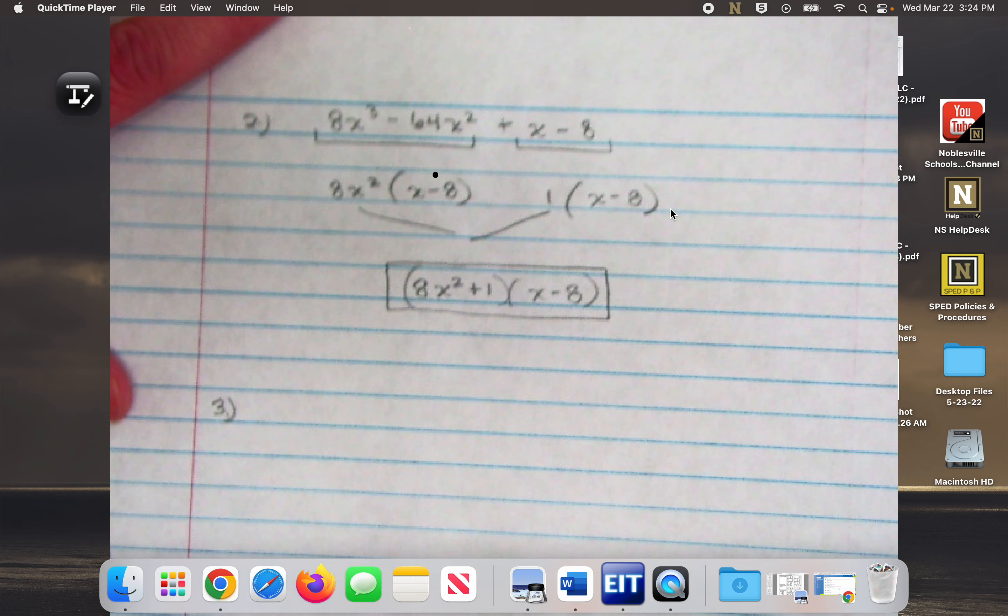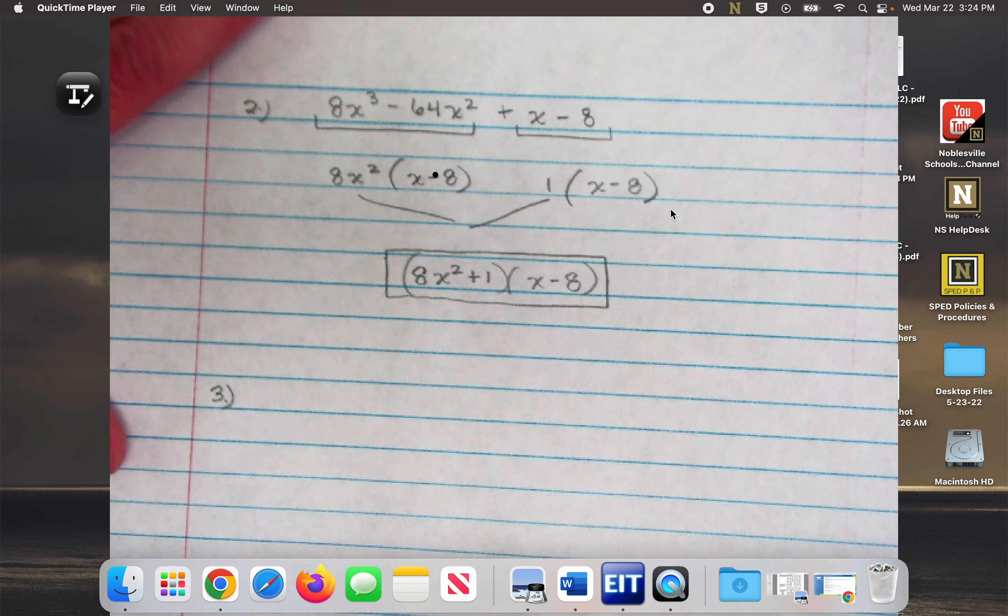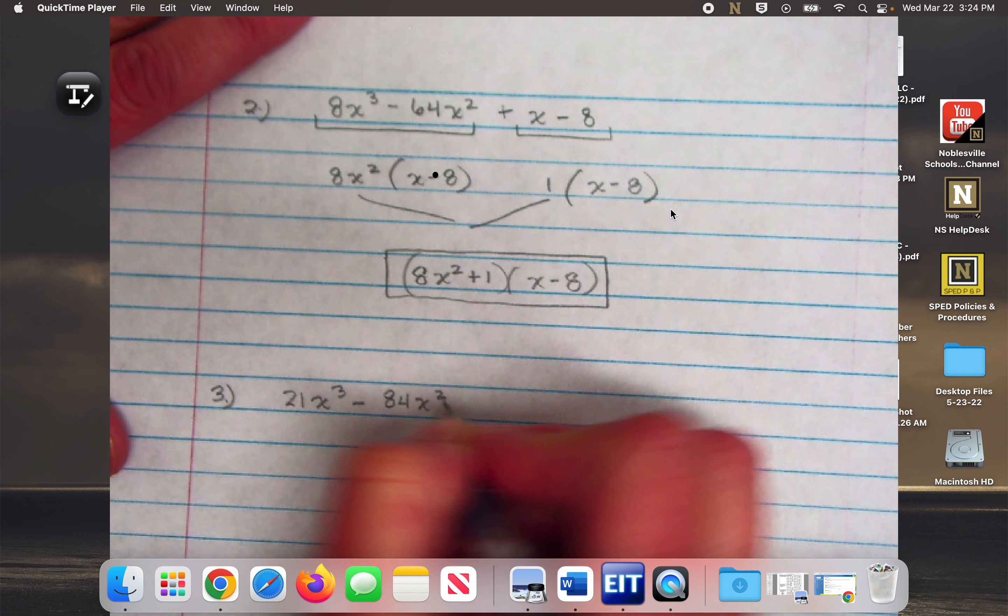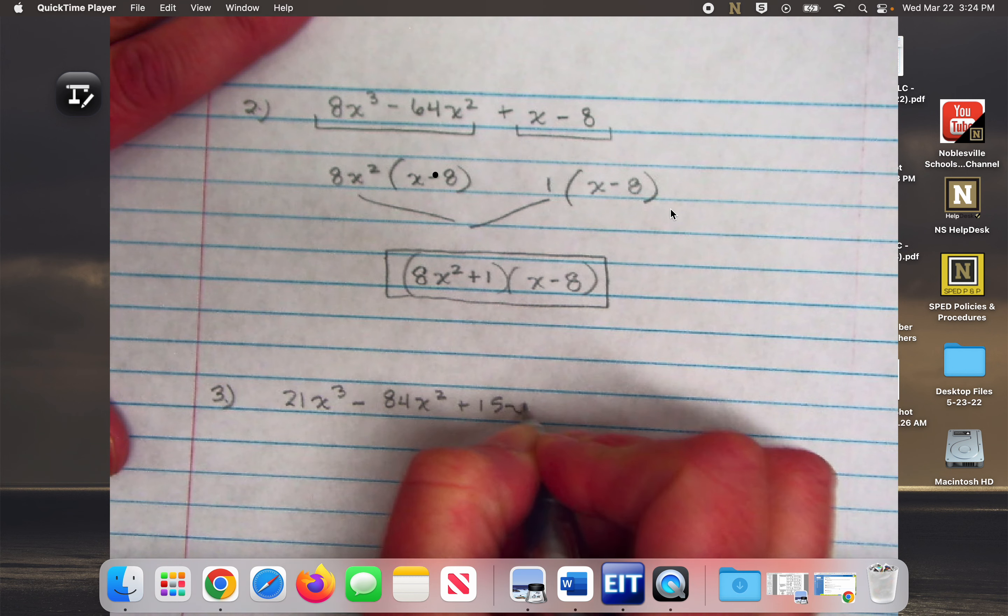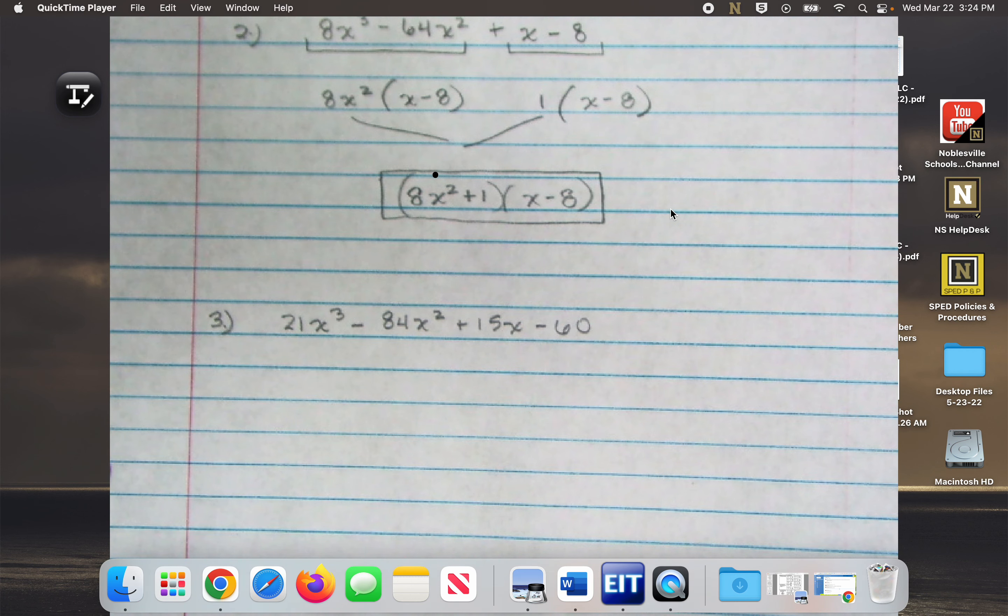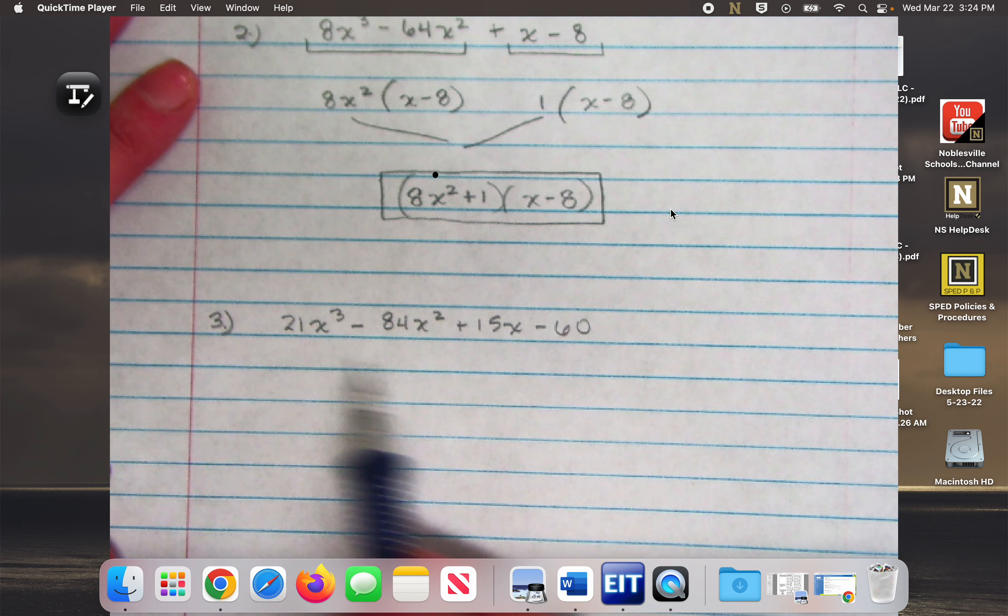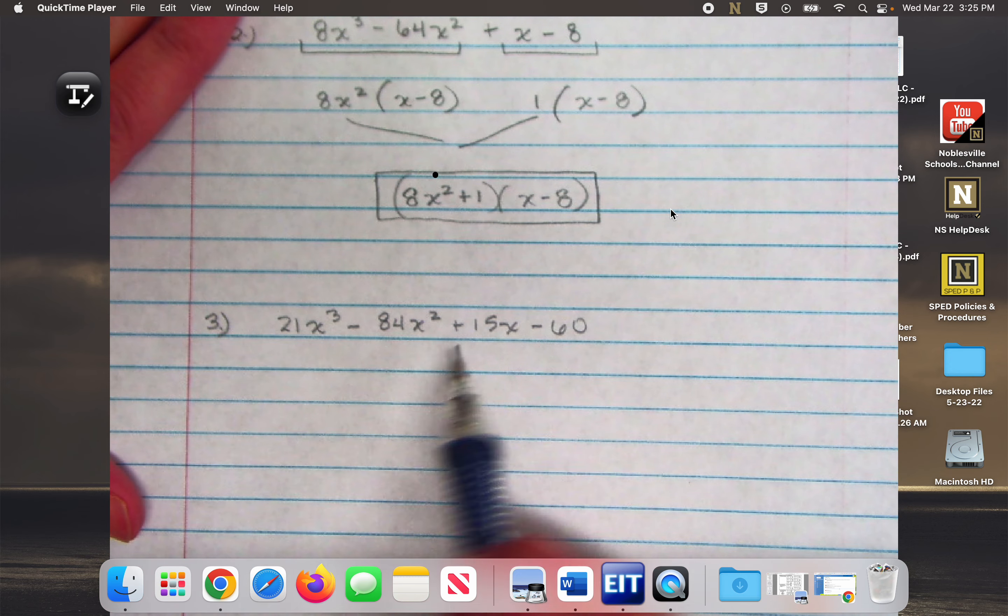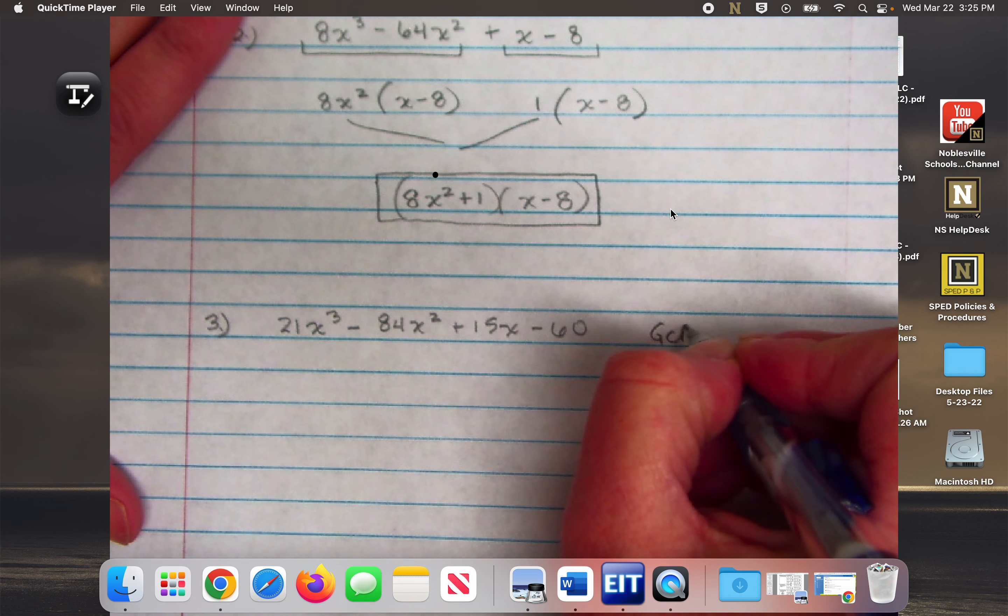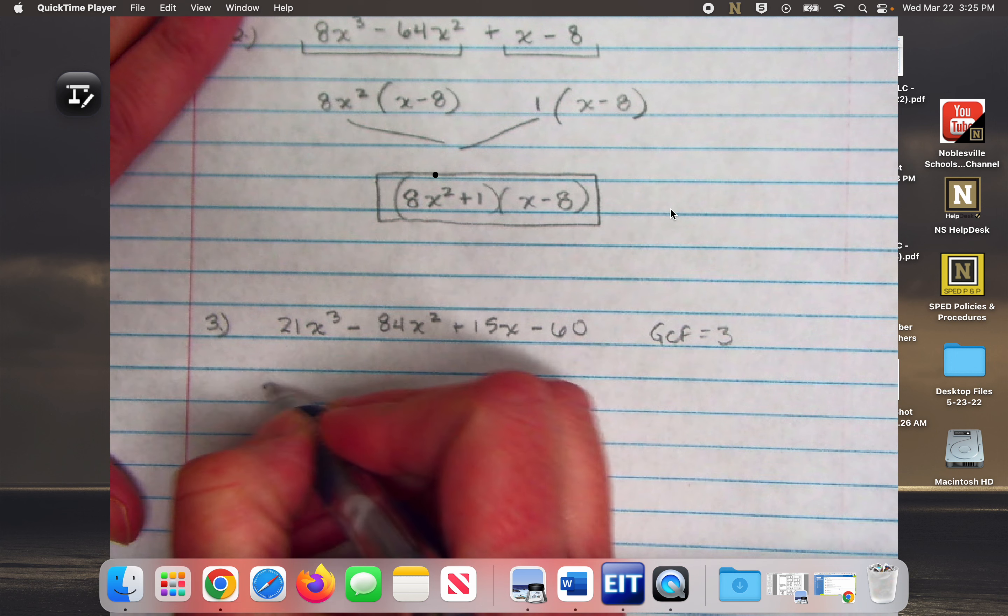And so this last one is going to put everything together. So go ahead and copy this down and then we'll talk about it. Some of you may have noticed right away that this actual polynomial has its own greatest common factor before I even group it. It would be 3.